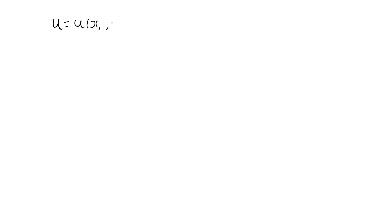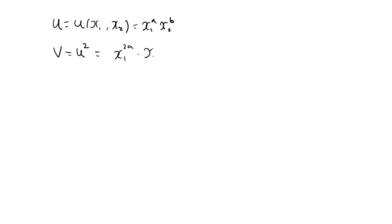Hopefully you remember the following. If I have a utility function, such as a Cobb-Douglas utility function, restricting a and b to be strictly positive, then any monotonic transformation of this utility function will represent exactly the same preferences. For example, if another individual has the utility function u squared, that would be x1 to the 2a times x2 to the 2b — this individual will have exactly the same preferences. The indifference curves will be identical, and these two individuals will always agree when two bundles are compared.